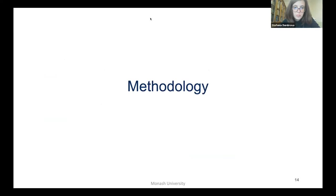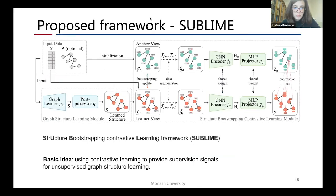Then I will introduce the proposed method. To solve the unsupervised graph structure learning problem, we propose a structural bootstrapping contrastive learning framework named SUBLIME. The basic idea of our method is using contrastive learning to provide supervision signal for unsupervised graph structure learning. The input of our model could be a single feature matrix X for structural inference or a feature matrix X and an unreliable adjacency matrix A for structural refinement.